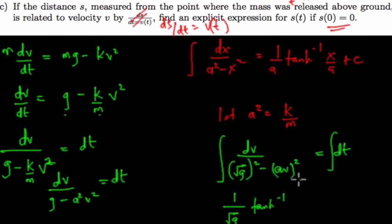Then the hyperbolic tangent inverse of, this is representing my x, that is av all over, this is my a now, all over root g. Now equals t.